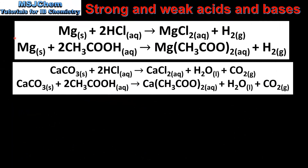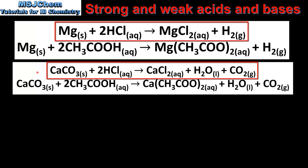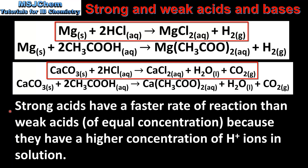Next we look at rates of reaction. Here we can see two sets of reactions. In the first set, magnesium reacts with hydrochloric acid and magnesium reacts with ethanoic acid. In the second set, calcium carbonate reacts with hydrochloric acid and calcium carbonate reacts with ethanoic acid. In both sets of reactions, the fastest reaction will be with a strong acid, because strong acids have a faster rate of reaction than weak acids of equal concentration due to a higher concentration of hydrogen ions in solution.